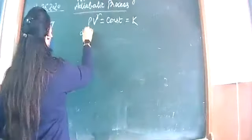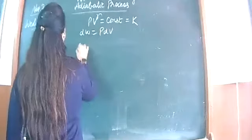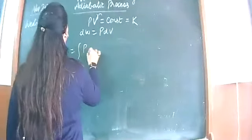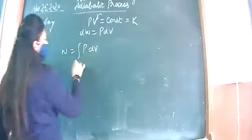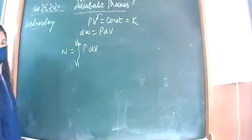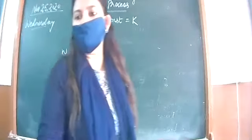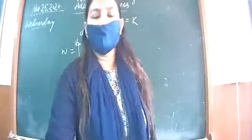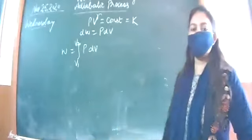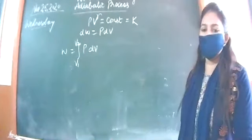We know that dW is pdV, so to get the total work we need to integrate the expression within the limits of volume from V1 to V2. This is the same expression we used yesterday for finding work done during an isothermal process.